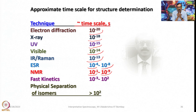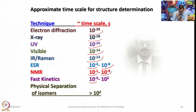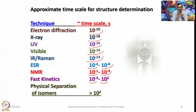In that case, we probably have to suppress the dynamic process by cooling the NMR sample to much lower temperature so that the dynamic process falls within this range and we can study it through NMR. Similarly, if it is much slower than 10⁻¹ then we have to heat the sample so that the dynamic process falls within this range. For fast kinetics it is about 10⁻³ to 10², and for physical separation of isomers — if two isomers are formed in a reaction and they have different morphology — at least 100 seconds are needed.